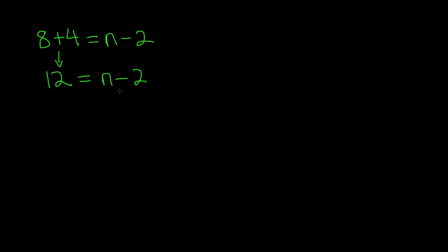We need to, since we're subtracting 2, we need to add 2. And remember, whatever you do on one side, you do on the other. So if positive 2 here, then we do positive 2 over here as well. 12 plus 2 is 14. And 14 is equal to n.